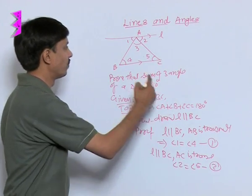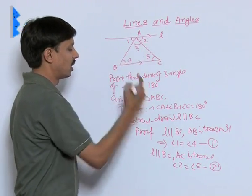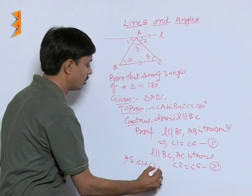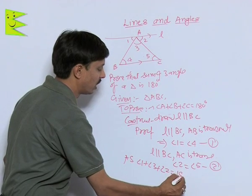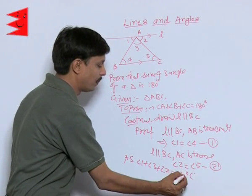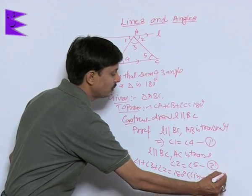Now, we know that angle 1 plus angle 3 plus angle 2 is 180 degrees. By which theorem? By the property of linear pair straight line.